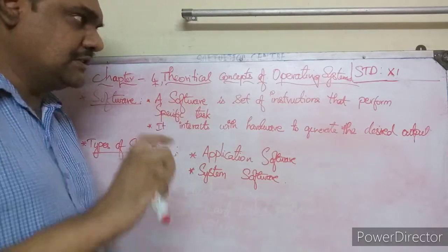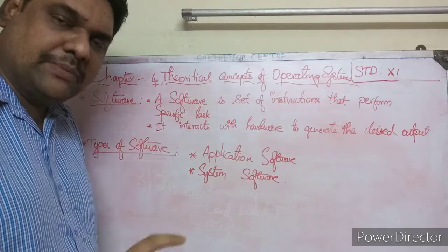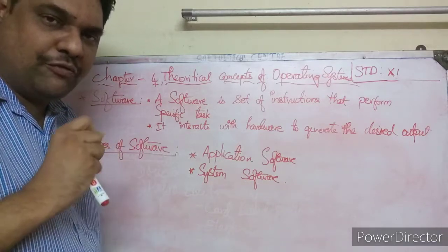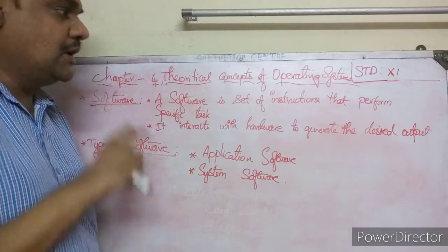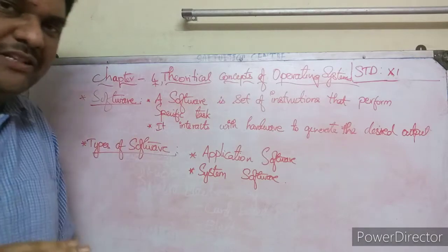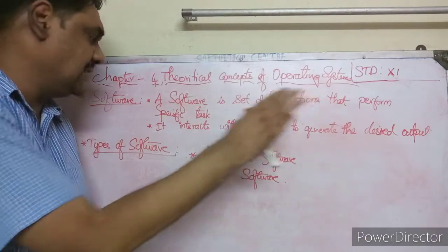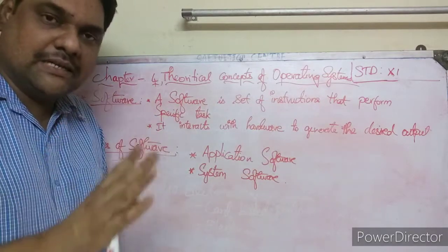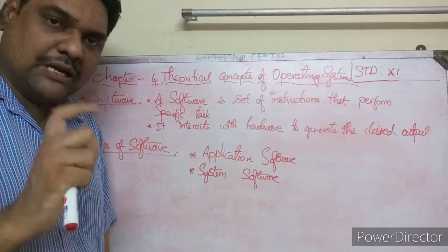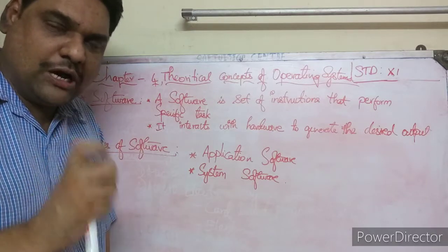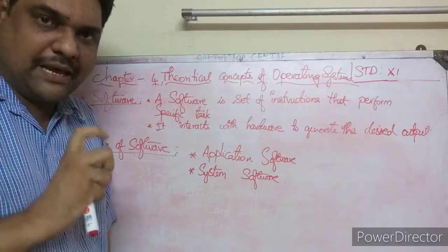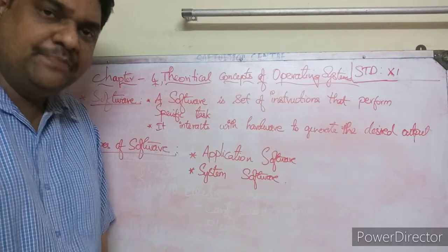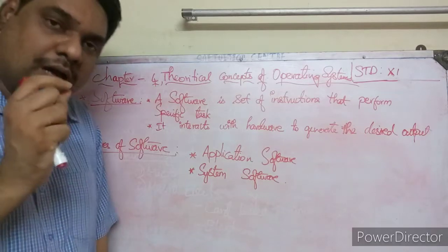First, let us see what an operating system is. Let us see what is software. A software is a set of instructions that performs specific tasks. In our computer, we have hardware and software. In the first and third chapters, hardware was covered.